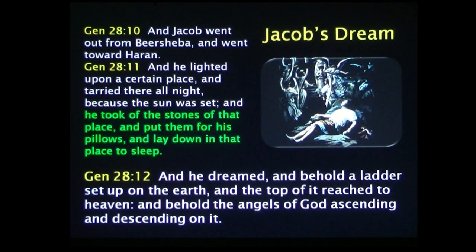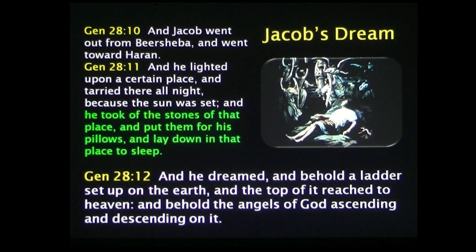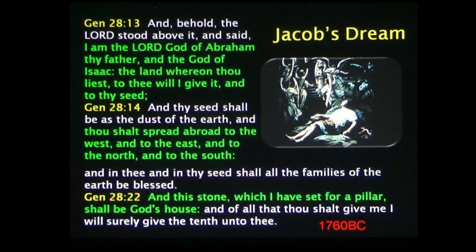Genesis 28, from verse 10: 'And Jacob went out from Beersheba and went towards Haran, and he lighted upon a certain place and tarried there all night because the sun was set, and he took of the stones of that place and put them for his pillows and lay down in that place to sleep. And he dreamed, and behold a ladder set up upon the earth, and on top of it reached to heaven, and behold angels of God ascending and descending upon it.' Essentially what he dreamed about was this ladder going up to the heavens and angels going up and down on it. Then the Lord stood above it and said, 'I am the Lord God of Abraham thy father and the God of Isaac.'